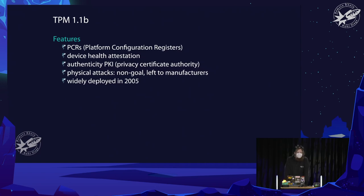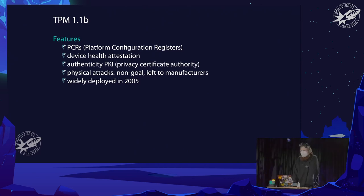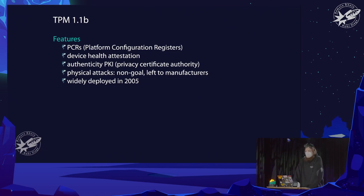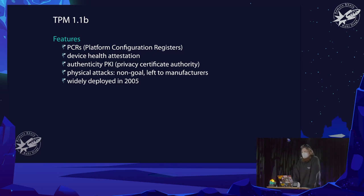The first iteration was TPM 1.1b — not 1.0, already showing it was revised over time. It introduced Platform Configuration Registers (PCRs), device health attestation for verifying a device's secure state, a Public Key Infrastructure (PKI) for multi-party verification, and authentication. It was designed to protect data in general, not from physical attacks — that was left to manufacturers. It was widely deployed around 2005.